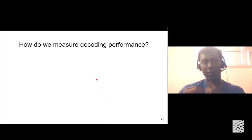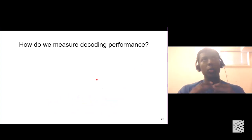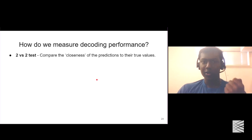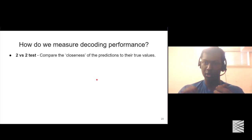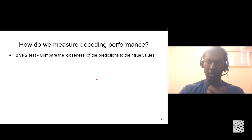Now that we understand the regression model and how it predicts word vectors from brain imaging data, we need a way to assess performance. There is a technique called the two-versus-two test. In this test, we compare the closeness of the predictions to the true values, done after we have obtained the predictions during the testing phase.